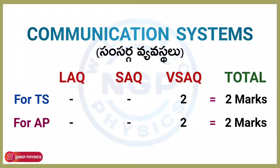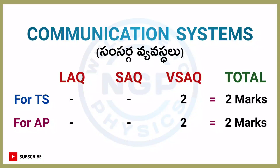Last chapter: Communication Systems. For both AP and TS students, one VSAQ — one 2-marks question. Chapter weightage is 2 marks.